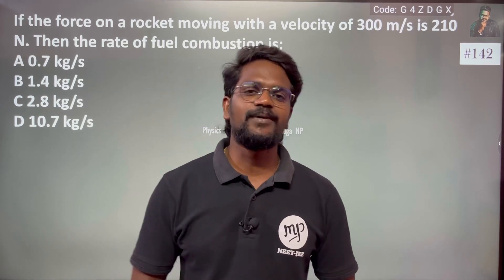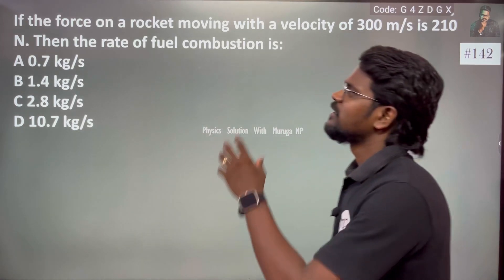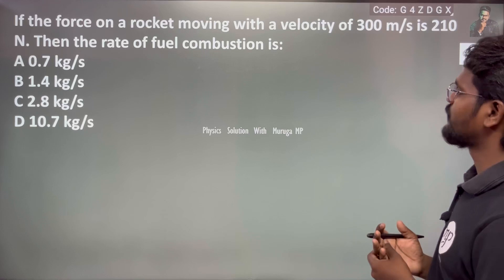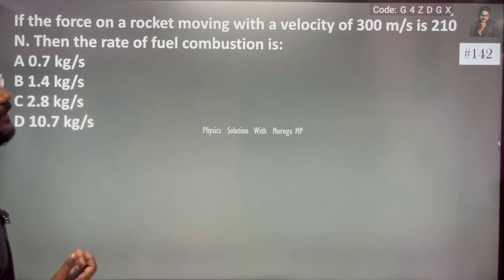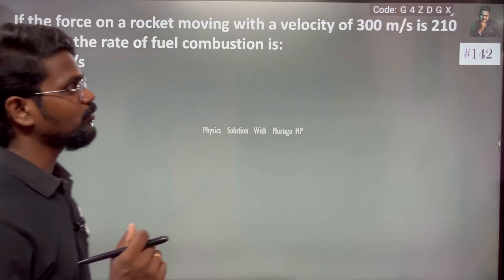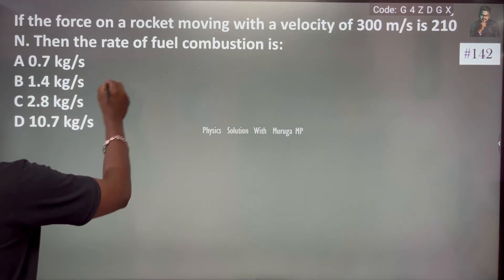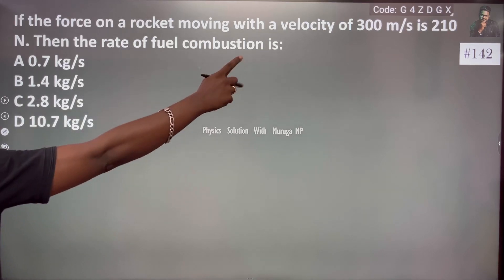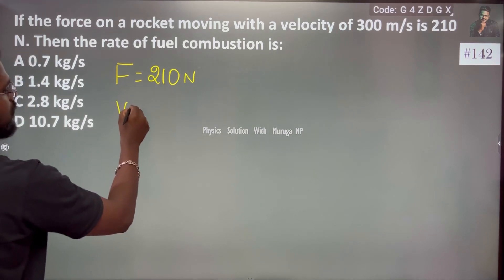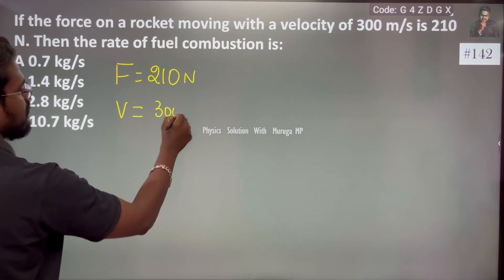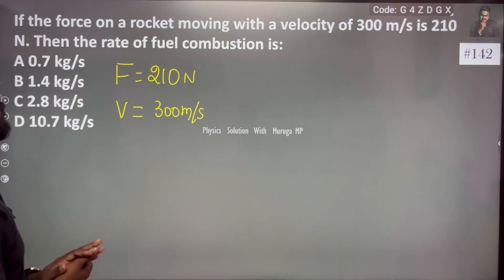Hi everyone! If the force on a rocket moving with a velocity of 300 meters per second is 210 Newton, and the velocity is 300 meters per second — because it has direction obviously — then the rate of change of fuel combustion, so the mass change, is what we need to find.